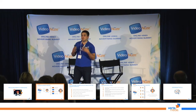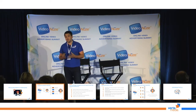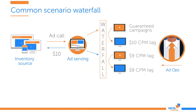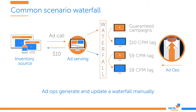If it's the first time he encounters a traffic source, he puts in the high-paying ones. But if he knows the source, he may choose lower-paying tags with less latency and fewer errors. Either way, AdOps generates and updates this waterfall manually.